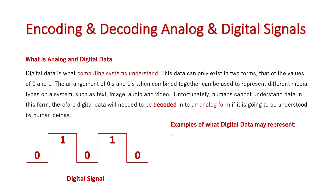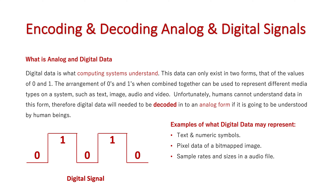Digital data may represent text and numeric symbols that we type on our keyboard; pixel data for a bitmapped image — the colours and the bit depth available for those colours; sample rates and sizes for an audio file — how often a sample is taken, reflecting the quality of audio we get; and the image and frame data of a video file — the resolution of the screen image and how often a frame occurs per second. All that data is accumulated in digital form when we encode the data.